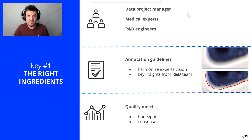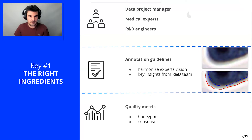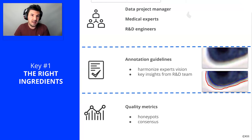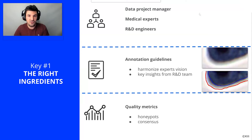The third key point is to have continuous access to quality metrics. With the Kili platform, we have access to honeypots to measure the quality of annotators and to consensus to measure the quality of annotation. A honeypot is simply a series of reference images for which we know the truth very well. The annotator will annotate them, and if they make a mistake, we'll be able to detect it and, for example, review the guidelines with them. Consensus means having the images annotated by several annotators, giving us access to several labels per image so we can assess concordance or discordance.